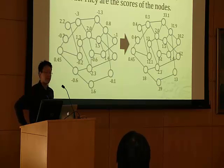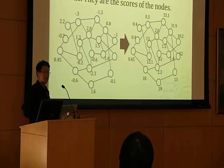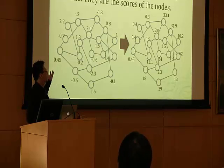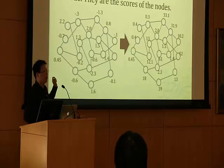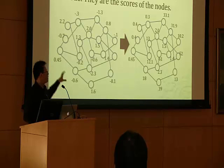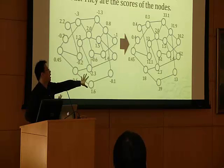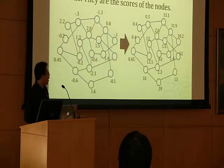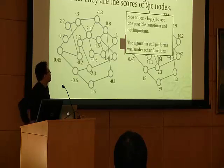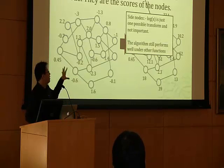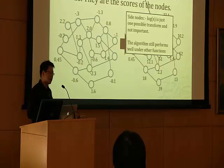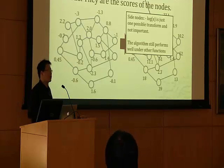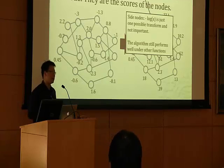Their algorithm consists of three steps. In the first step, they transform the set of numbers into a different set of numbers. The way they do this is to compute the p-value of each signal and then apply the negative log function. So the input is the graph, and this is the output of the first step.